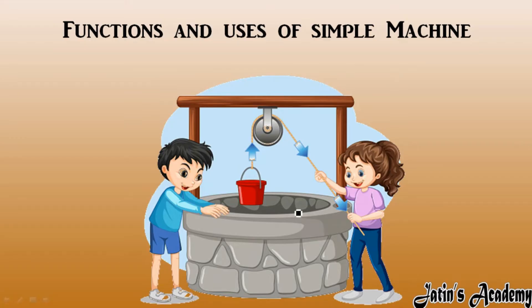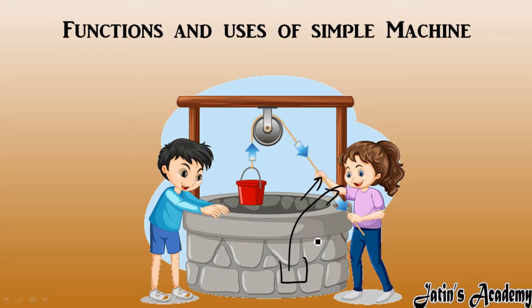For example, if you want to take water from a well, if we don't use a pulley system, then you have to take the rope and pull it — applying the force in the upward direction. Applying force in the upward direction is very difficult for a person; this is not a convenient direction for a human being.